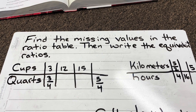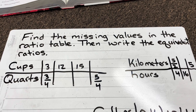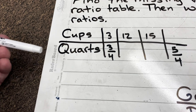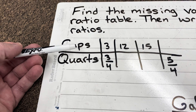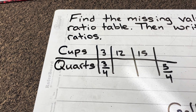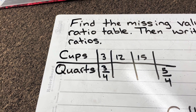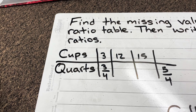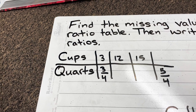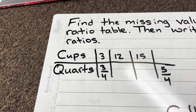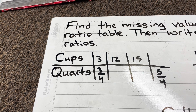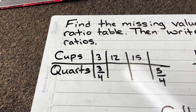The instructions say: find the missing values in the ratio table, then write the equivalent ratio. In this first table I have two values — cups and quarts. For example, you might be doing a recipe, and it says for every 3 cups you need 3/4 of a quart. Our goal is to fill in the missing values.